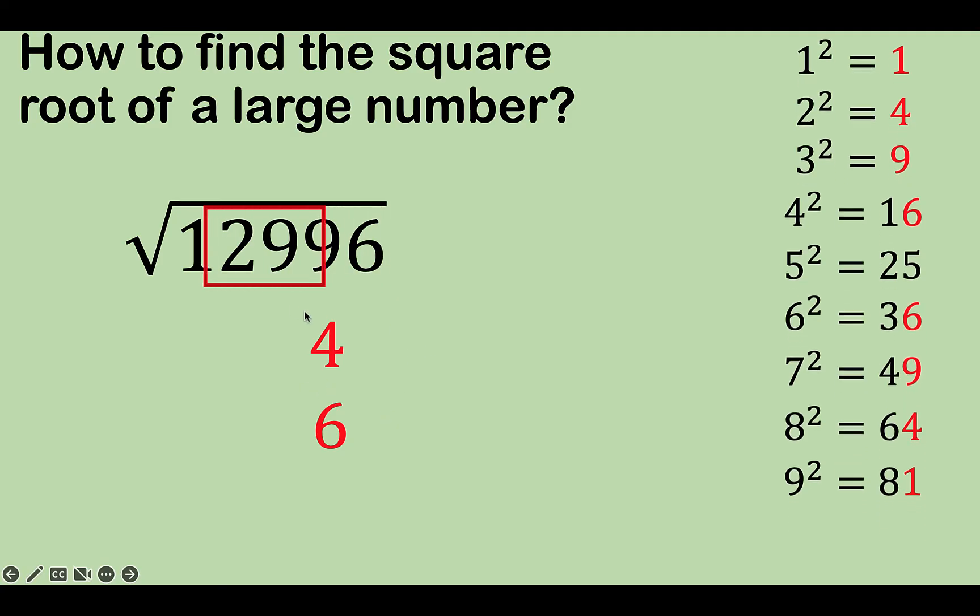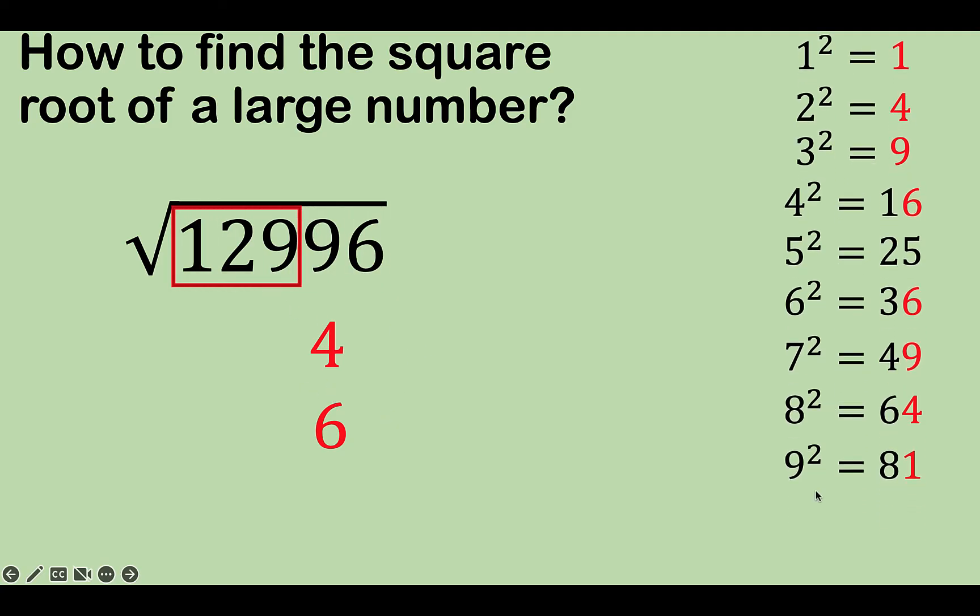Then we can move to 129. And let's extend this a little bit, because we want a number that's closer to 129, but a perfect square. And that number is 11 squared. So we take 11 here. So for our possible choices here, we have 114 or 116.